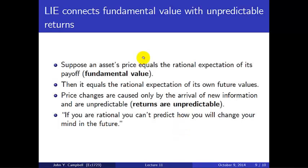Now, we're going to say more about this in lecture, but I just want to emphasize that the law of iterated expectations connects fundamental value to unpredictable returns. So suppose an asset's price equals the rational expectation of its payoff, let's call that the fundamental value. Then it equals the rational expectation of its own future values. Price changes are caused only by the arrival of new information, and are therefore unpredictable, which gives us the statement that returns are unpredictable. A way to say this is if you're rational, you can't predict how you will change your mind in the future, and with this model of prices, price changes are changes of mind based on new information, so they have to be unpredictable.